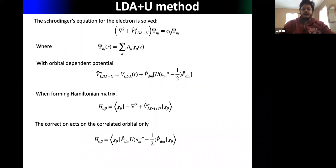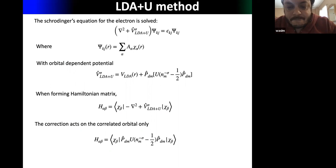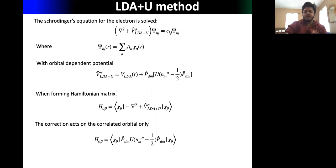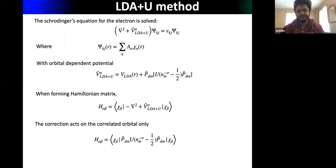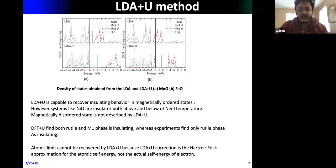Another approach is the LDA+U method. In LDA+U we construct an orbital-dependent potential, project out the correlated space, and add an on-site U in that correlated space. LDA+U has been applied to transition metal oxides and works well — for example, for MnO and FeO it correctly opens a gap that simple LDA cannot produce.